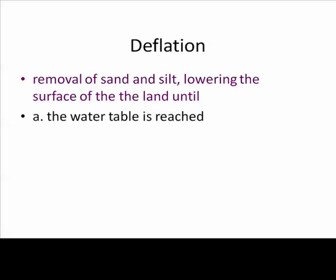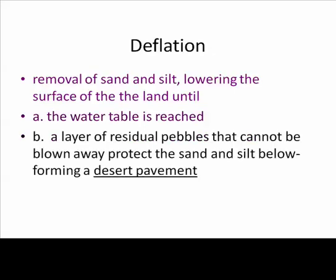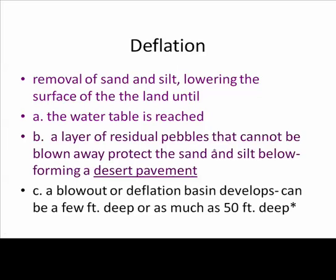Deflation is the removal of sand and silt, which makes the surface of the land go down. This would continue endlessly until either the water table is reached, holding the soil in place, or you have something called desert pavement — a layer of residual pebbles that can't be blown away.